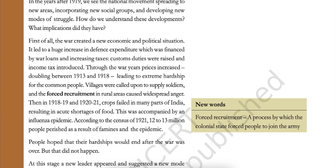Custom duties were raised and income tax introduced. Through the war years, prices increased, doubling between 1913 and 1918, leading to extreme hardship for the common people. Villages were called up to supply soldiers, and the forced recruitment in rural areas caused widespread anger. Then, in 1918-19 and 1920-21, crops failed in many parts of India, resulting in acute shortage of food. This was accompanied by an influenza epidemic. According to the census of 1921, 12 to 13 million people perished as a result of famines and epidemic.